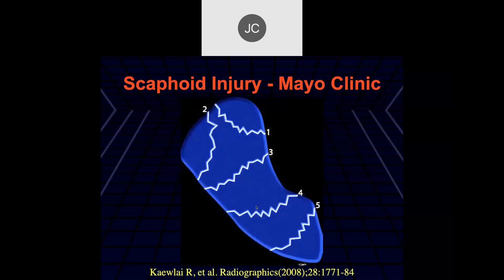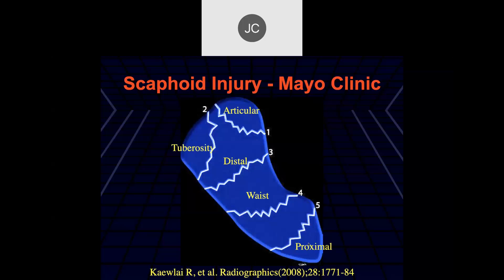Let's move on to more common clinical problems involving scaphoid injury. This is from the Mayo Clinic. Certain areas commonly see fractures. More distal fractures are relatively uncommon. Distal waist fractures are also relatively uncommon. More proximal waist fractures are quite common, and proximal pole fractures are very common. These lead to an increased risk for osteonecrosis of the proximal fragment. Fracture categories include articular, tuberosity, distal waist, waist, and proximal scaphoid fractures.